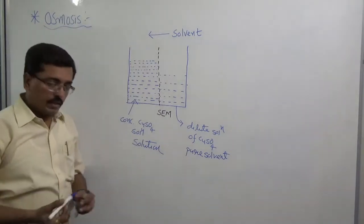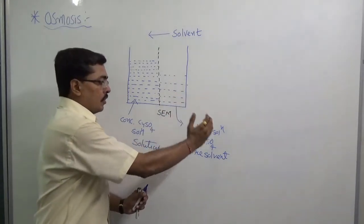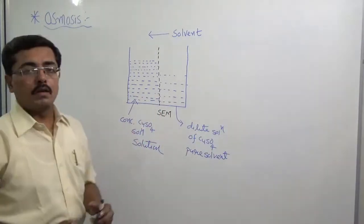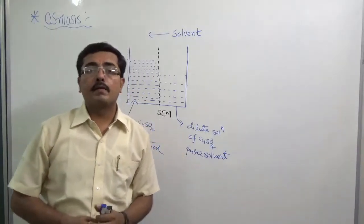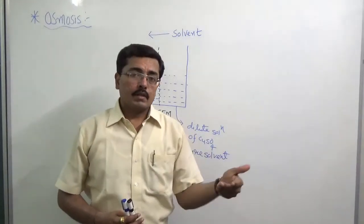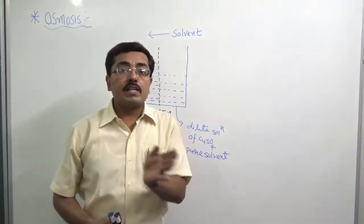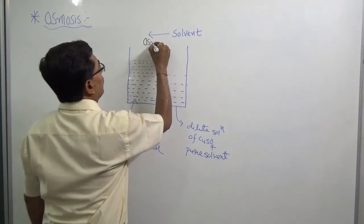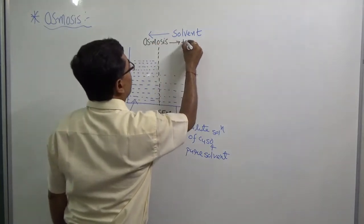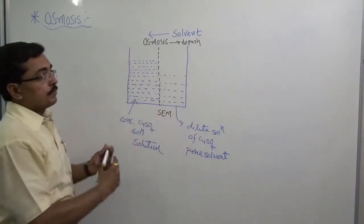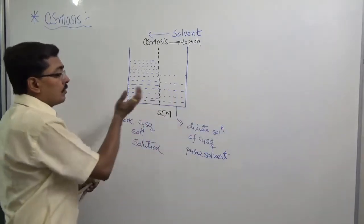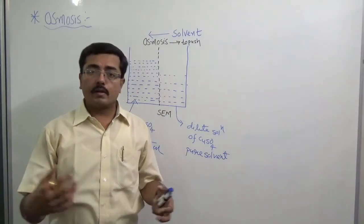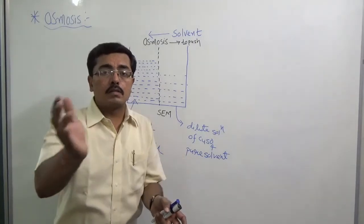So osmosis is nothing but a spontaneous flow of solvent molecules from a dilute solution to a concentrated solution, or from pure solvent to a solution. There are many examples in daily life — in any plant, water molecules reach from root to leaves due to osmosis. The actual meaning of osmosis is 'to push' — it is a Greek word. There is a force pushing solvent molecules from dilute to concentrated solution. This phenomenon is also observed in the human body and animal body.